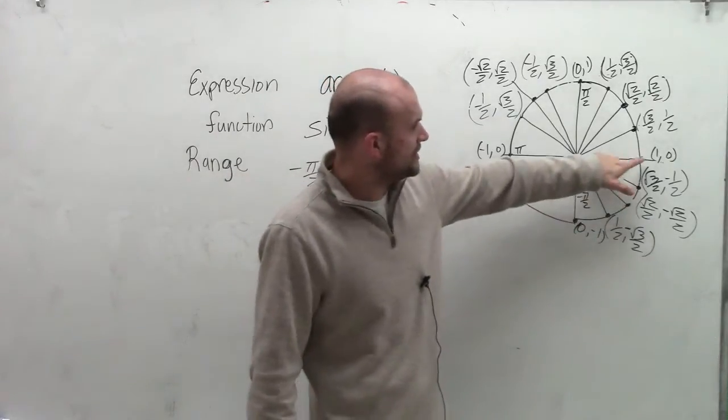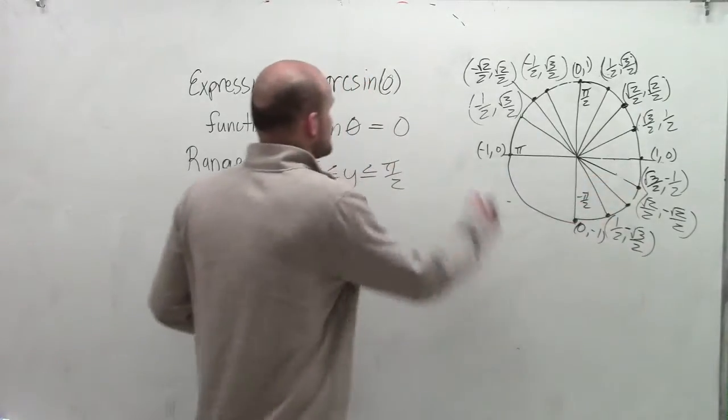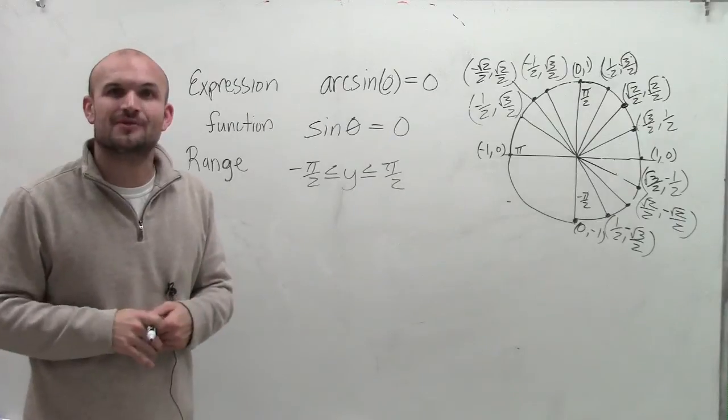When you look up there, you can see the only angle where the y value is 0 is actually the angle 0. Therefore, arcsin(0) equals 0. Thanks.